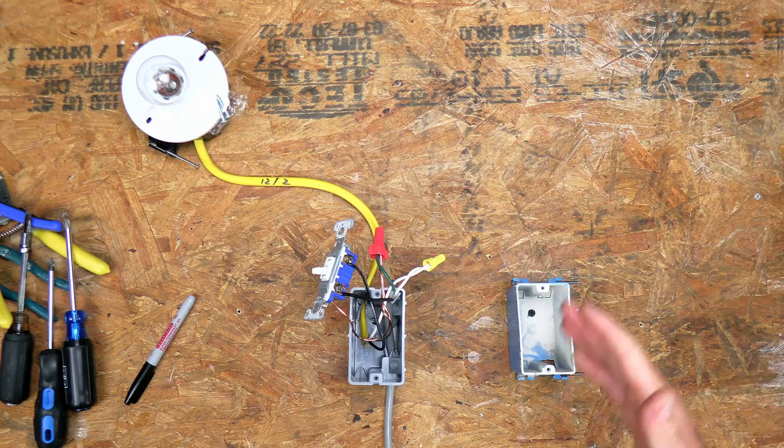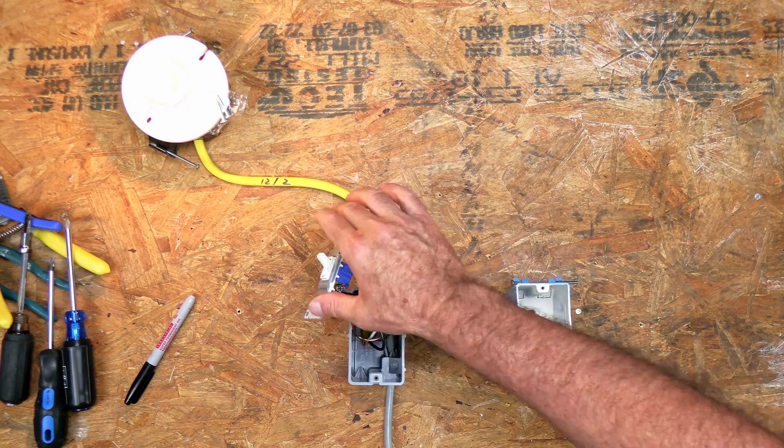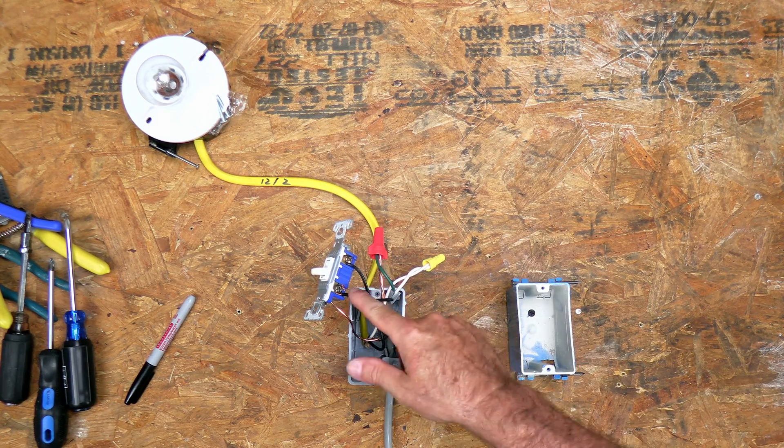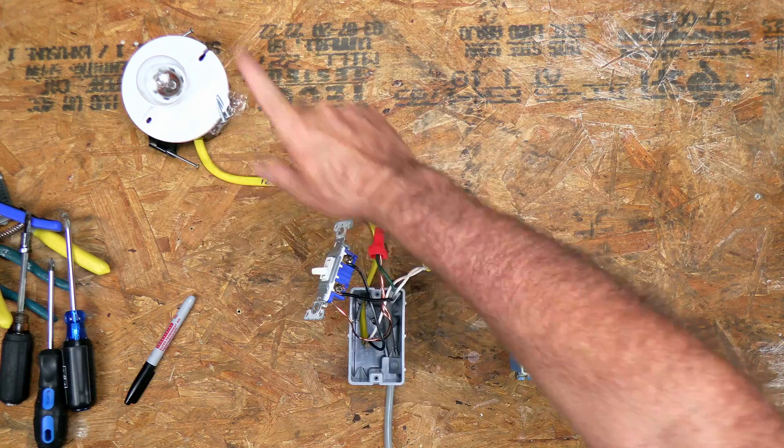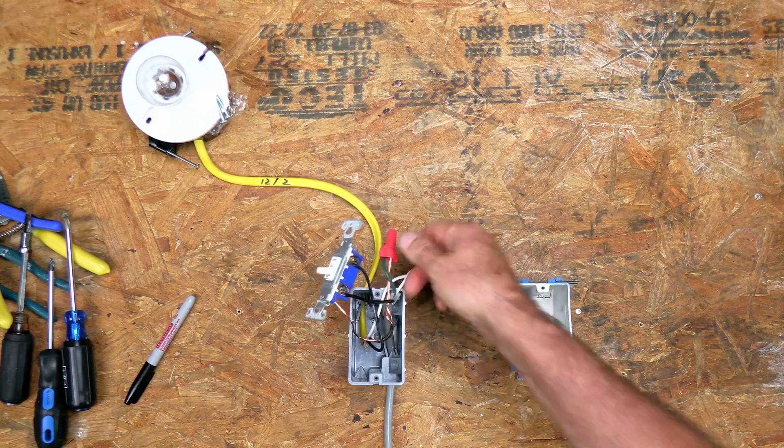Alright, so what we have here is a standard single pole switch to a light. This is the standard one location for a switch, and you've got your power coming in to the switch. Your power is leaving the switch and going to the light. Your neutrals are all tied together. Your grounds are tied together.